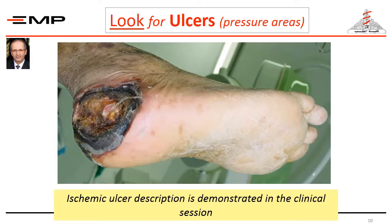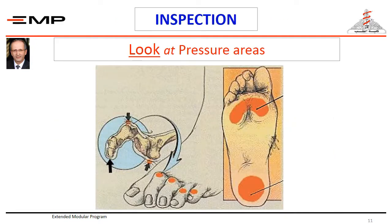The ischemic foot is subjected to trauma during walking, during wearing tight shoes, or with prolonged bed rest. Potential pressure areas should be inspected for trophic changes, for ulcers, or gangrene. The figure shows different areas of potential pressure.